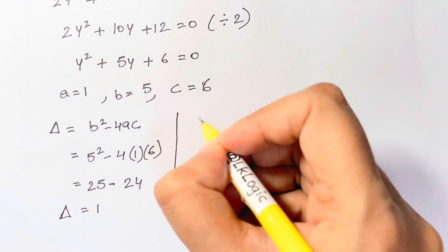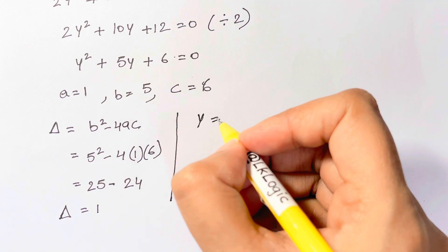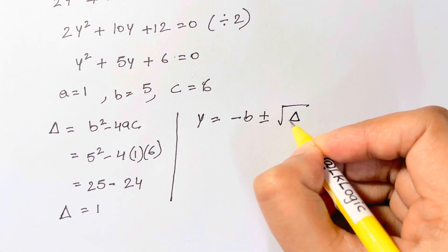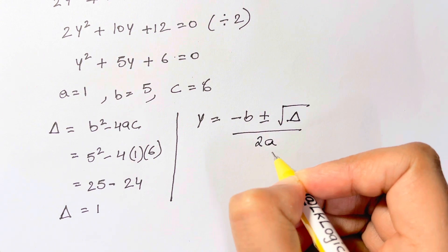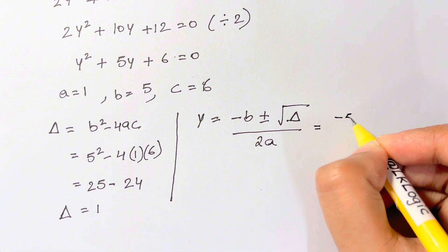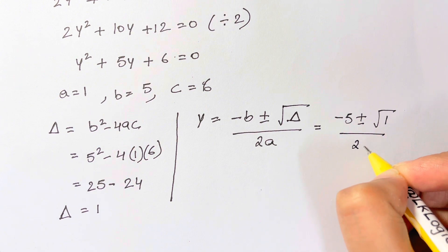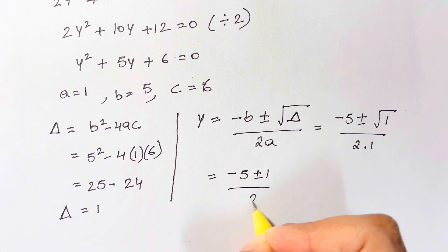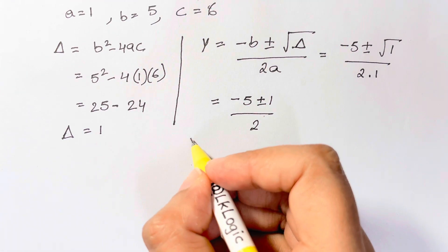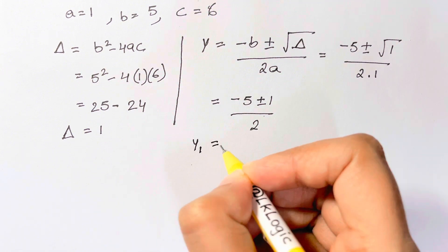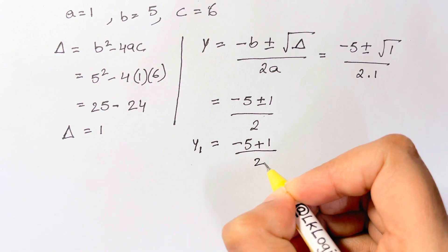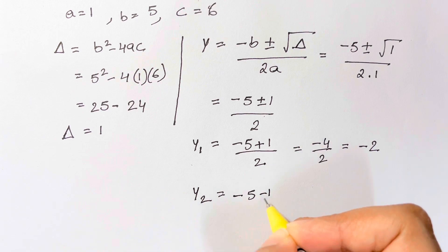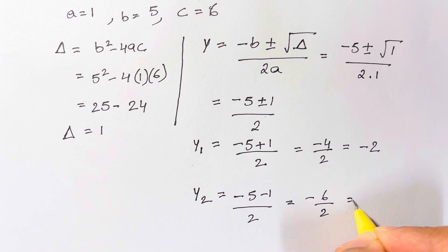Now our quadratic formula: y is equal to minus b plus or minus the square root of the discriminant, b squared minus 4ac, over 2 times a. So we have minus b is minus 5, plus or minus square root of 1, over 2. So here you have two values for y. The first one, y₁, is minus 5 plus 1 over 2, that's minus 4 over 2, equal to negative 2. And the second value of y is negative 5 minus 1 over 2, which is negative 6 over 2, equal to negative 3.